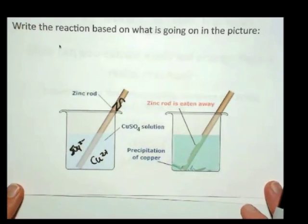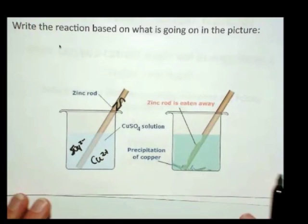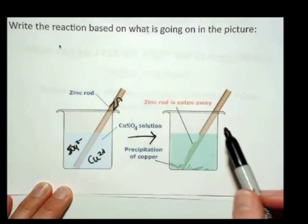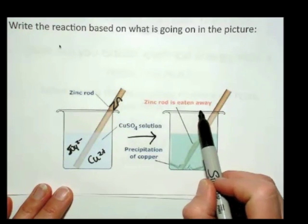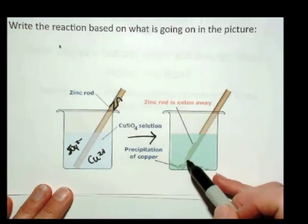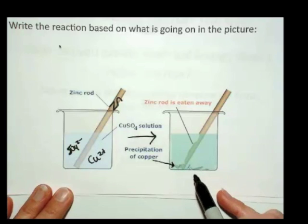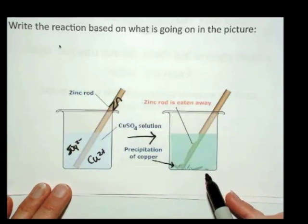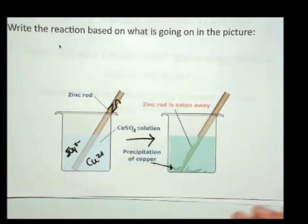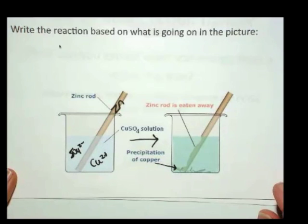What happens shortly after you put that zinc rod in that copper-2-sulfate solution is the zinc rod starts to be eaten away, and you get divots in the zinc rod, and then you get a precipitation of copper falling out onto the floor of the beaker. So given these conditions, let's try to write a chemical reaction based on what's going on.